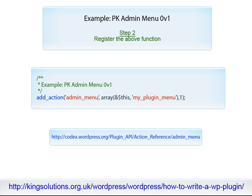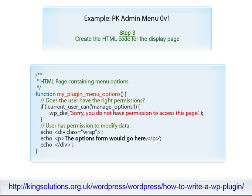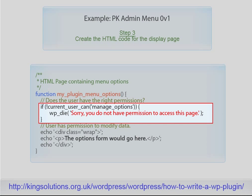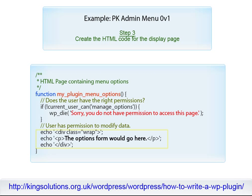In step 2, we need to register the above function, MyPluginMenu, using the AdminMenuActionHook. Notice this is simply an AddAction function. With step 3, we create the HTML code for the page to be displayed when the menu item is clicked — MyPluginMenuOptions in this example. This output code is just standard HTML. One thing to note in this function: before doing anything else, you should always check to see if the user has permission to view the page — hence the first if statement.